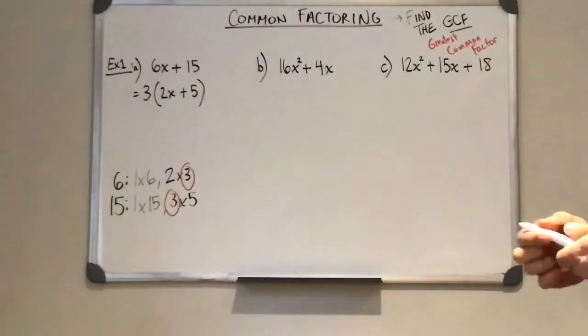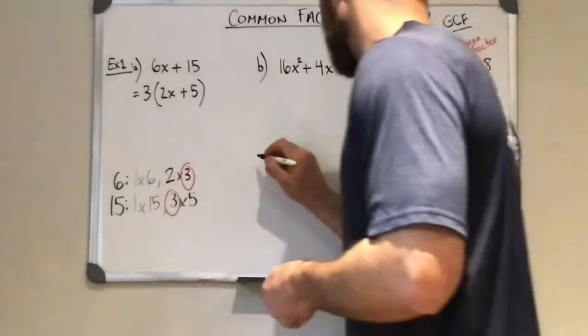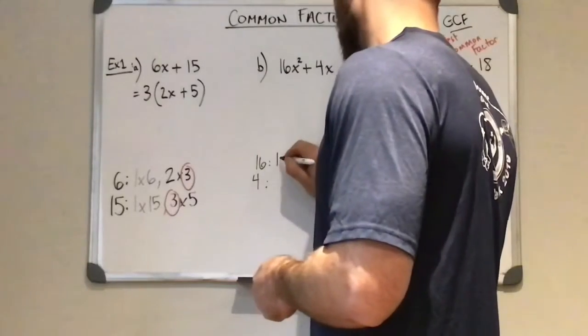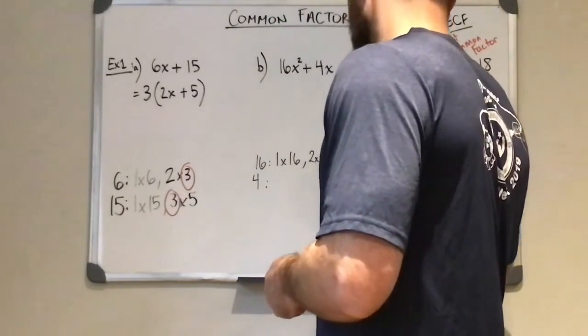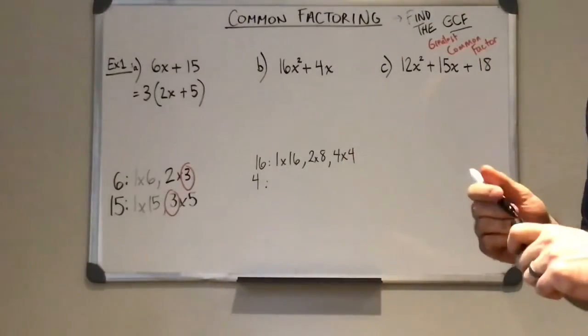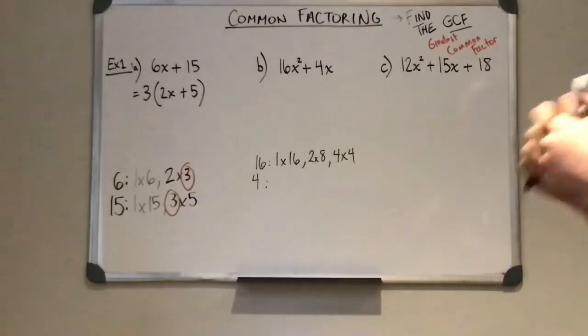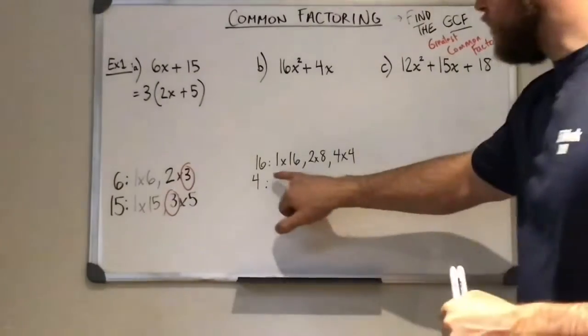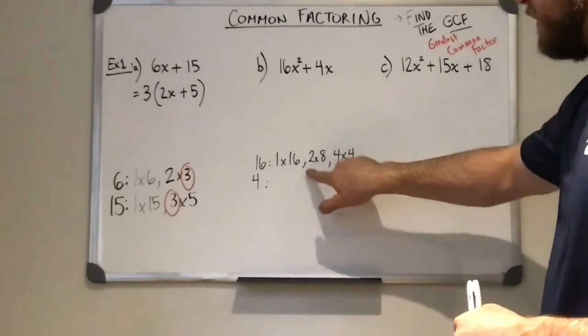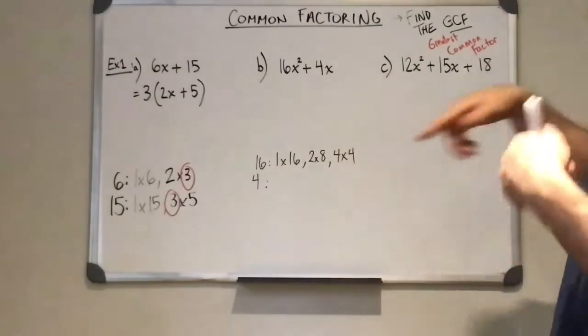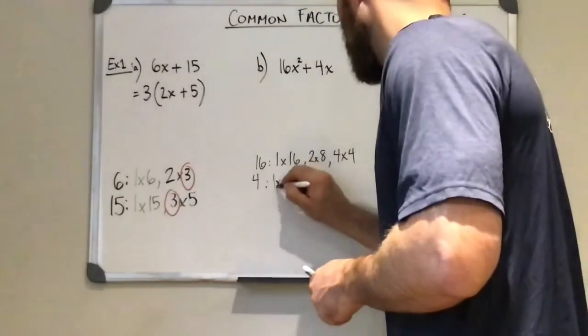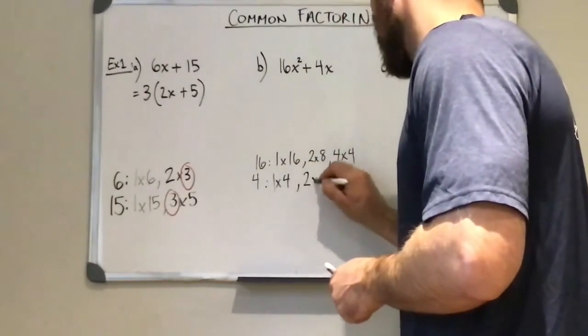Let's take a look at the second one. So if we have 16 and 4, 16 we could have 1 times 16, 2 times 8, and 4 times 4. Okay, and you can try this in your calculator, just punch in as many as you'd like, but just know that once you've hit a number, if the one on the left is always increasing, once you've hit the other side, you've hit them all. You can stop. If I look at 4, there's only 1 times 4, and 2 times 2.